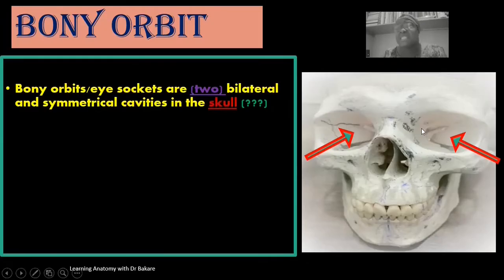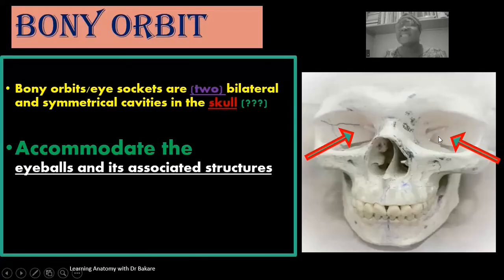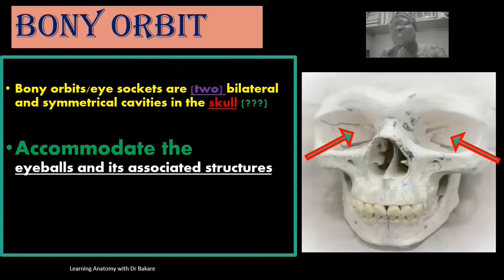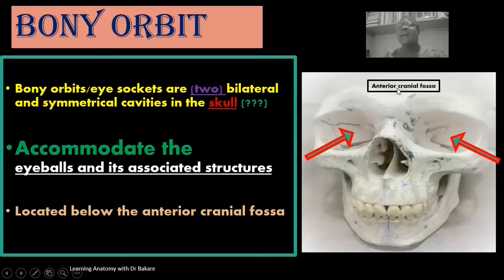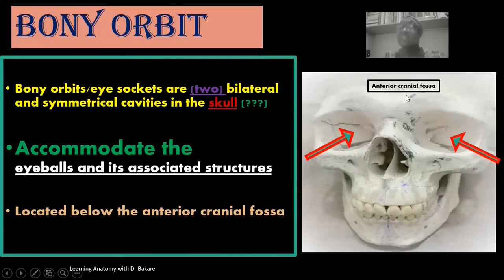You see it as symmetrical cavities located within the skull. This space, referred to as the eye socket, accommodates the eyeballs and associated structures, including the extraocular muscles, vessels, nerves, and the lacrimal apparatus. It is located below the anterior cranial fossa, with the middle and posterior cranial fossae located behind it. You see the orbit positioned below the anterior cranial fossa.